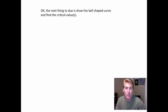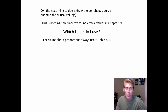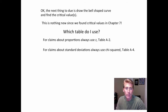The next thing to do is draw the bell-shaped curve and find the critical values. We did this in chapter 7 using Table A2, Table A3, and Table A4. Which table do we use when? If it's something about proportions, you always use z — no choice, you use Table A2. If it's a claim about standard deviations, there's again no choice — you use chi-squared, or Table A4. The only one that has a choice is when it's a claim about a mean.